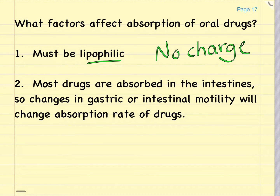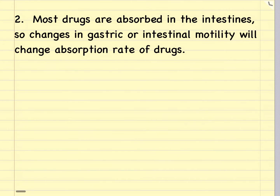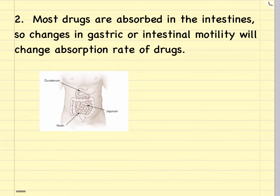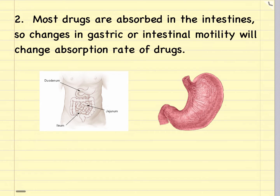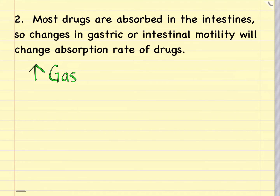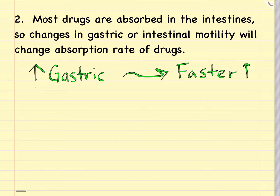Another factor affecting absorption of an oral drug is the speed at which the drug passes through the GI tract. Any changes in gastric or intestinal motility, such as that would occur with certain diseases, is either going to speed up or slow down absorption. Most drugs are absorbed in the small intestine, so anything that speeds up stomach motility is going to increase the rate at which it goes into the small intestine and increase the rate of absorption there.